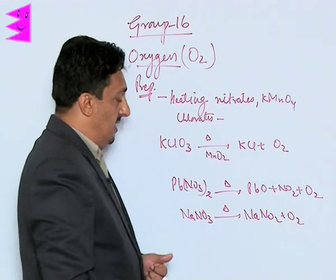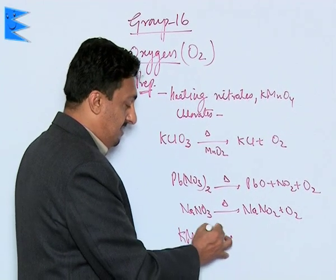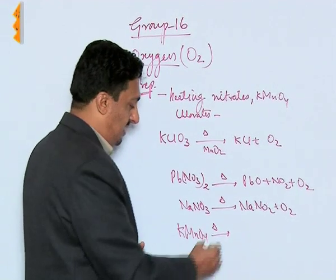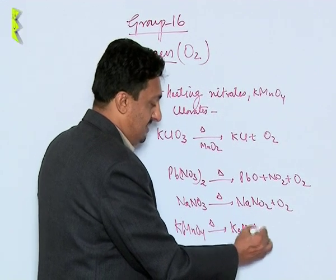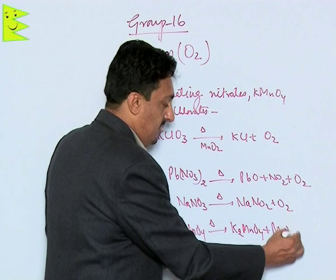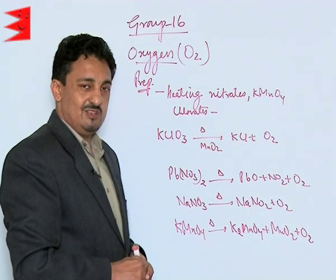In a very similar way, when dry solid potassium permanganate is heated, it decomposes to potassium manganate and MNO2, and it also releases oxygen which can be collected by the downward displacement of water.